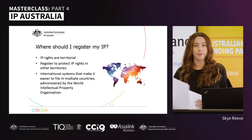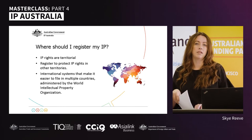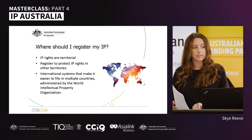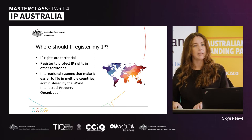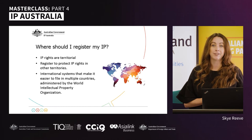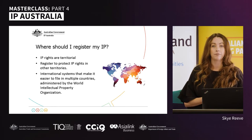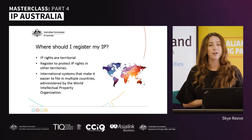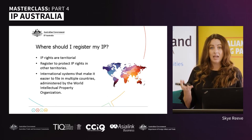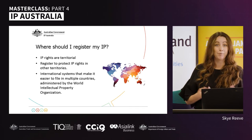IP rights are territorial, so you need to consider getting IP rights in all of the territories, nations, and jurisdictions where you're seeking to trade. This is particularly important for trademarks in first-to-file countries. There is evidence that people actively search online for trademarks they think are viable and then file for those trademarks. A number of companies have entered first-to-file countries only to find their trademarks already registered, facing a long and costly process to get the trademark back or rebrand in those nations.